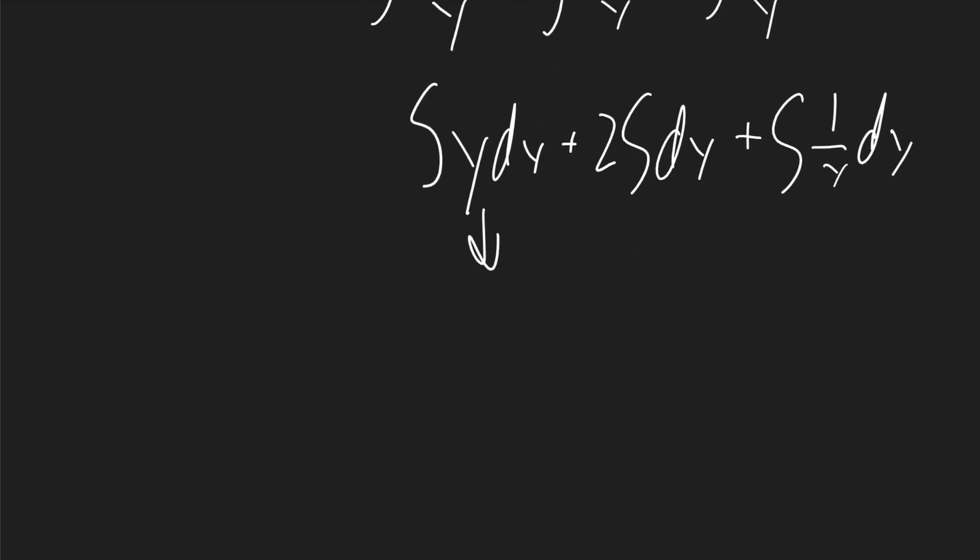So this term here will be 1 half y squared. That term there will be 2y. And the last term is going to be ln of the absolute value of y. So that's my left side.